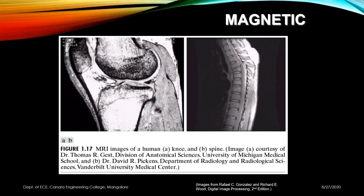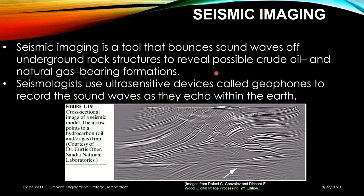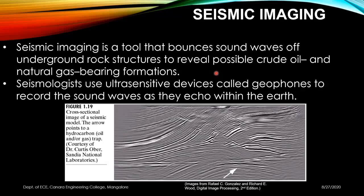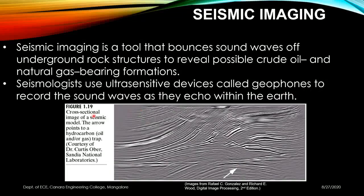We can also create images using seismic waves. Seismic imaging bounces sound waves off rock structures underneath the surface to reveal possible crude oil or natural gas bearing formations. Seismologists use ultra-sensitive devices called geophones to record sound waves as they echo within the earth and then create a map — which is essentially an image. An arrow mark in the example indicates a hydrocarbon trap that may be gas or oil.